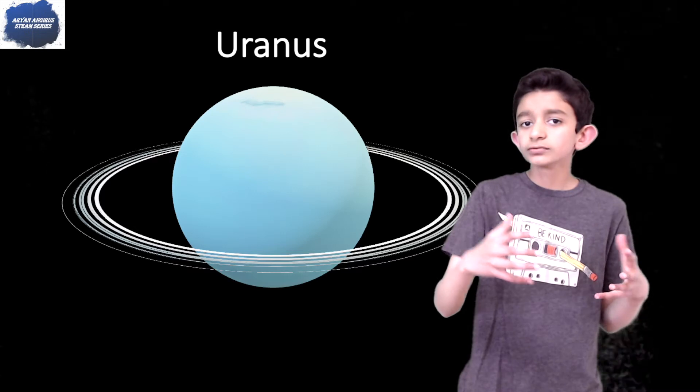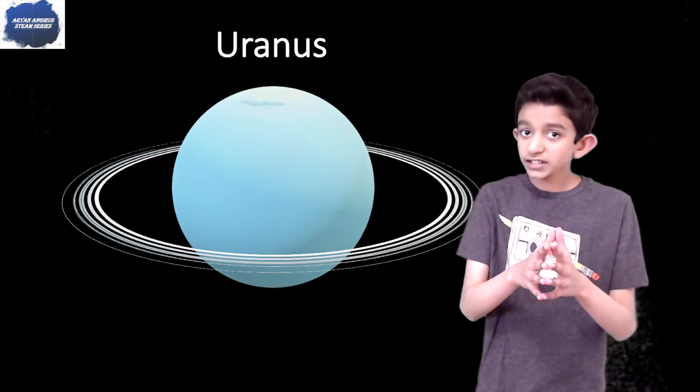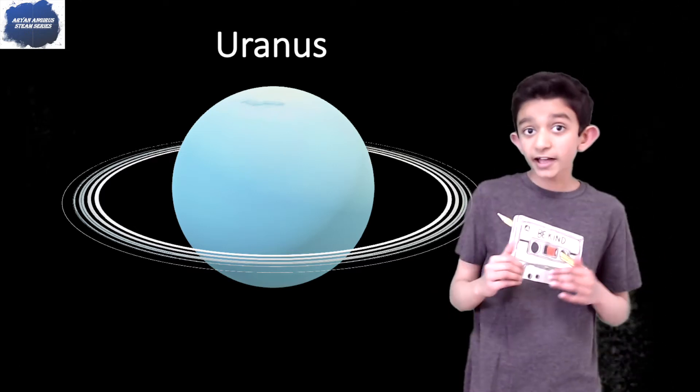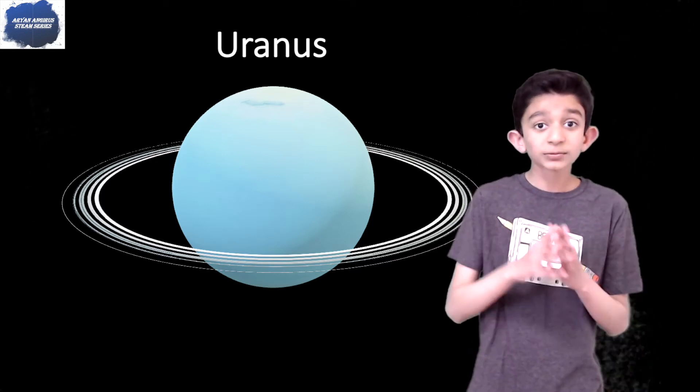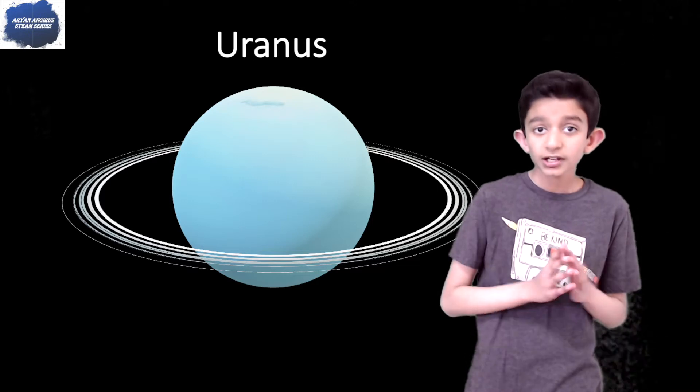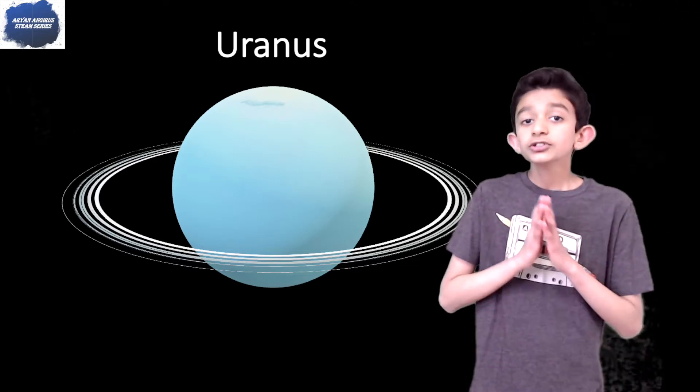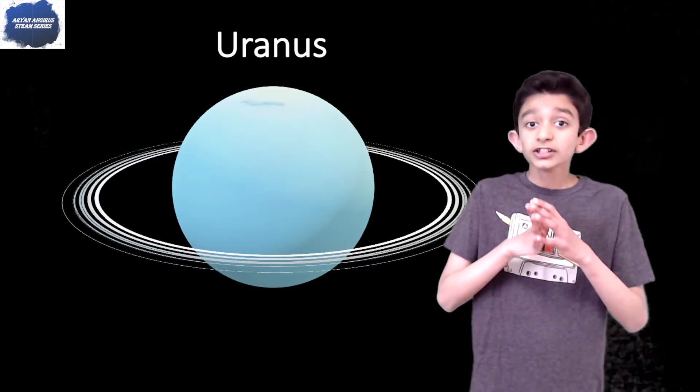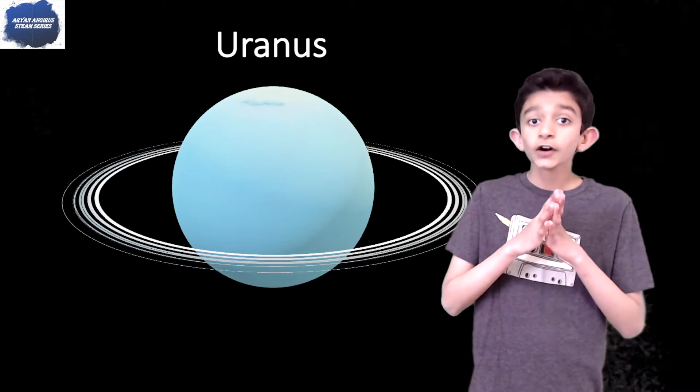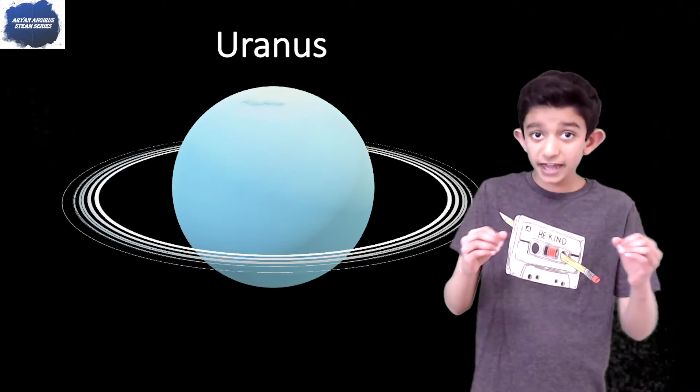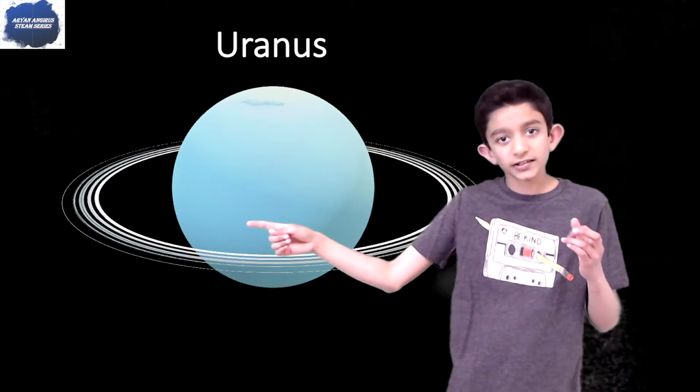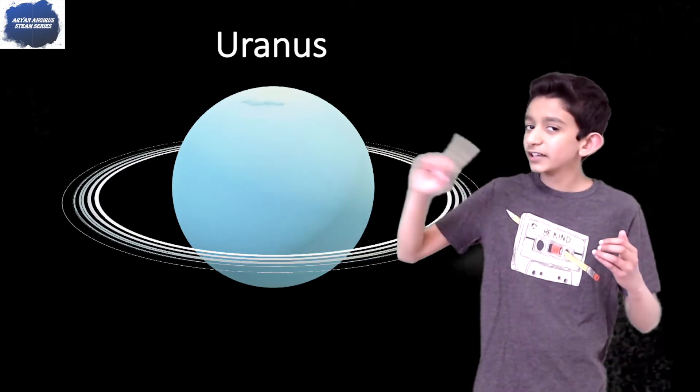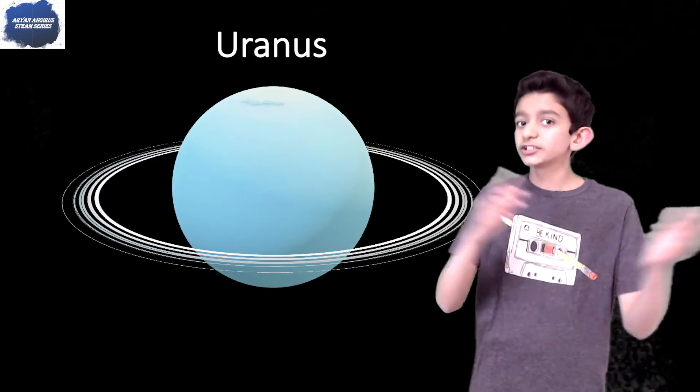If you guys didn't know already, Uranus has rings. And guess what else? It's completely sideways. Like Venus, Uranus spins the opposite direction of Earth and many other planets, so that means the Sun rises in the west and it sets in the east, unlike Earth where it's the opposite.